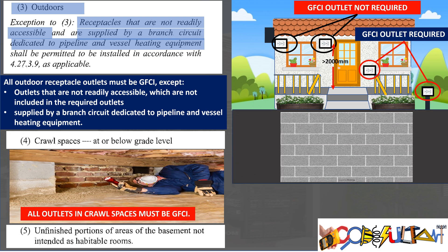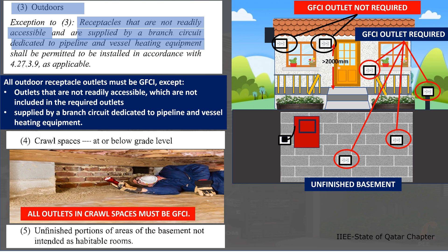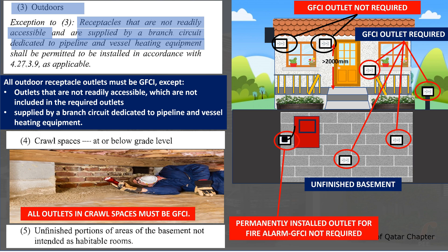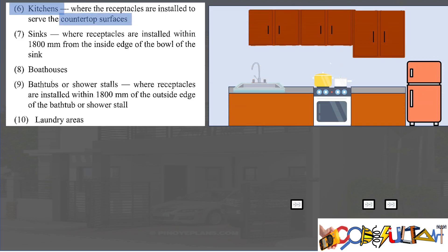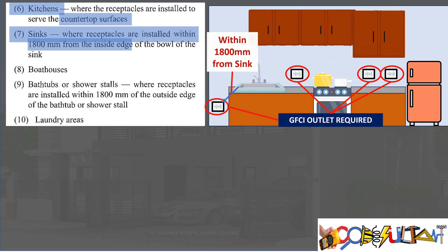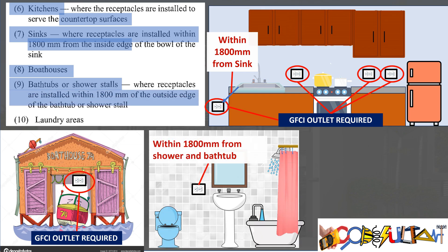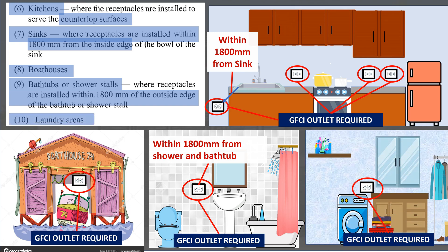Continuing dwelling unit GFCI requirements: 4. all outlets in crawl spaces must be GFCI; 5. all outlets in unfinished portions of basement areas not intended as habitable rooms must be GFCI. Permanently installed outlets for fire alarms or burglar alarm systems do not require GFCI protection. Outlets installed in kitchen countertop surfaces are required to be GFCI. All outlets within 1800 millimeters of the inside edge of the sink must be GFCI. All outlets at boathouses shall be GFCI. Outlets within 1800 millimeters of the outside edge of bathtubs or shower stalls must be GFCI. All outlets in the laundry must be GFCI.